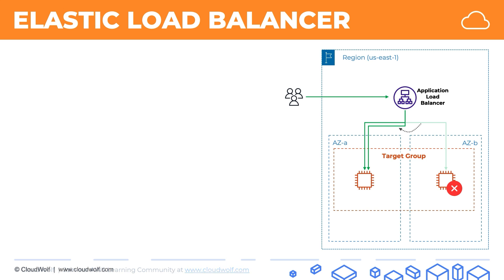That's also the reason why it's recommended to keep these instances in separate availability zones. It's not a requirement, but the more availability zones you can spread your target group across, the better. If one of the availability zones fails, your application will still be available because you have EC2 instances in other availability zones still running. The application load balancer — which, by the way, is a regional service, something to remember for the exam — is able to redirect traffic to the still-functioning instances in the target group. So that's how this works.